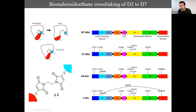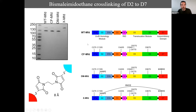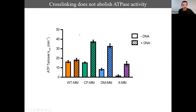We knocked out all natural cysteines in MFD, reintroduced two cysteines — one in domain 2 and one in domain 7 — and used a maleimide cross-linker to join them. This approach was informed by earlier work from the labs of Alex Deconesco and Irena Artsimovic, who made similar cysteine substitutions and cross-linked them via disulfide bonds. All the data I'll show uses the shortest cross-linker, with an 8-angstrom linker between domain 2 and domain 7.